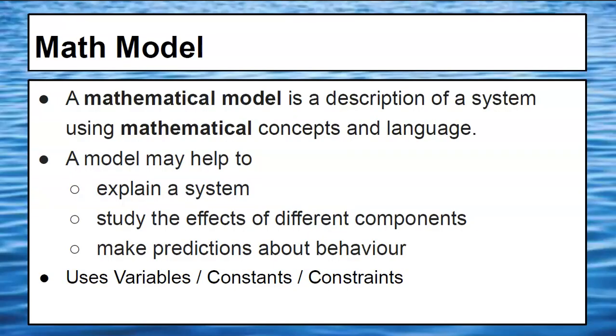So a mathematical model is a description of a system using mathematical concepts and language. We use formulas, numbers, equations. A model helps explain a system, study the effects of different components. What happens when the temperature changes? What happens if the resistance changes in electricity? As this changes, how does that affect something else? These different components, different factors, and then make predictions about what's going to happen. And here at the end you can see that we're using variables, constants, and constraints.